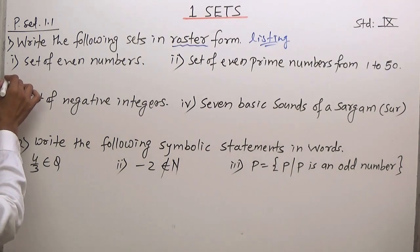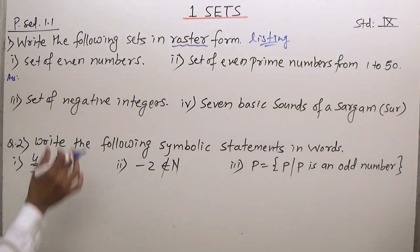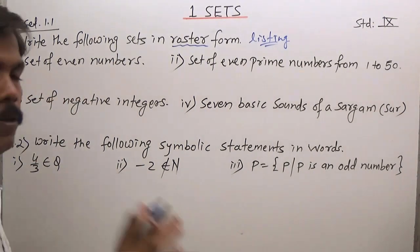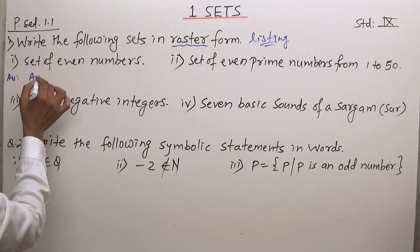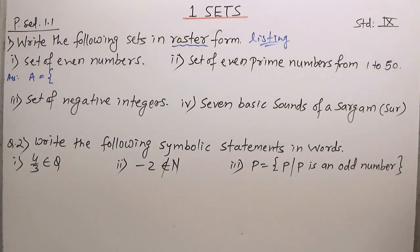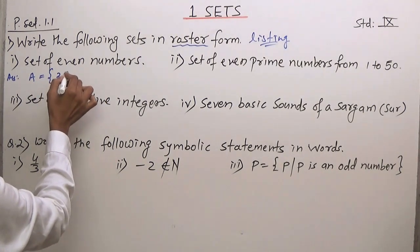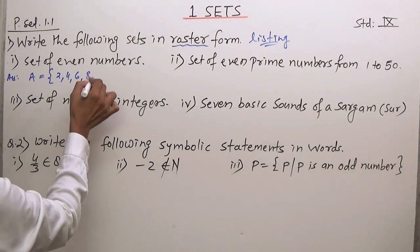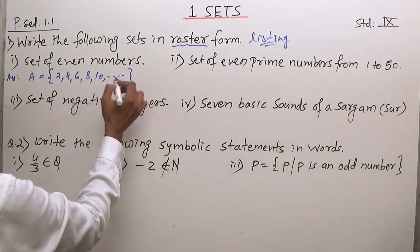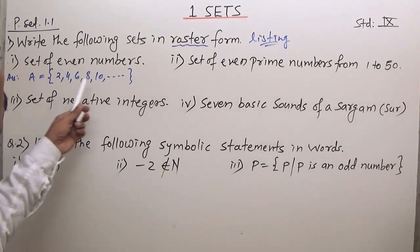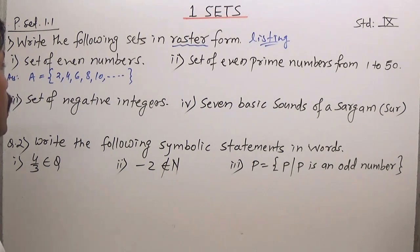Starting with question number 1: set of even numbers. Let this set be called A. We will use curly brackets. Even numbers start from 2, 4, 6, 8, 10, dot dot dot, and so on. It is an infinite set, so we go on. This is the set of even numbers.